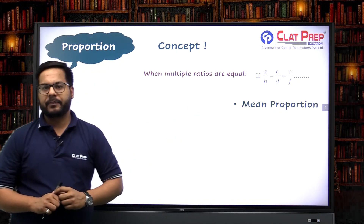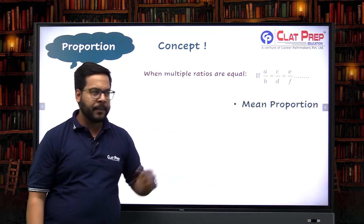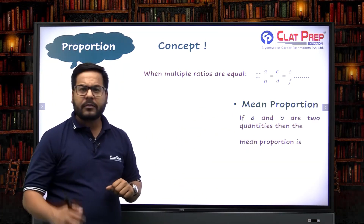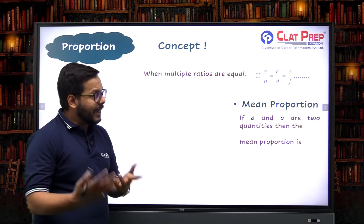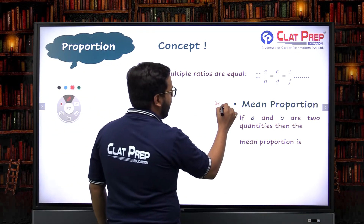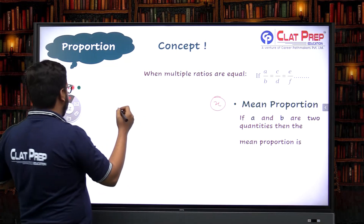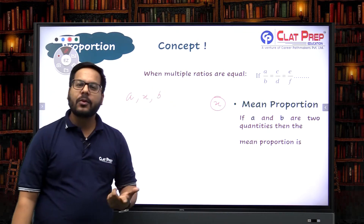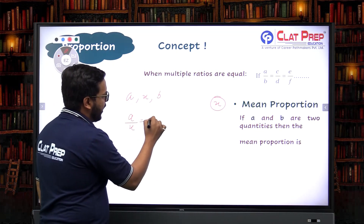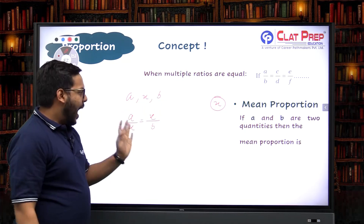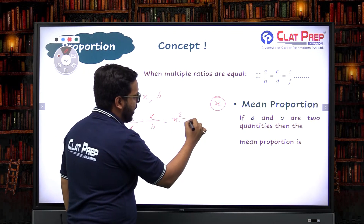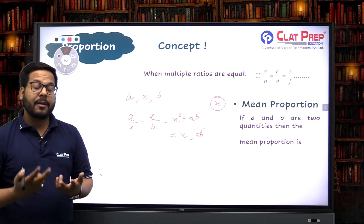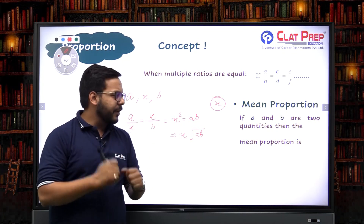The first aspect is mean proportion, also known as geometric mean. If two quantities a and b are given and we need the mean proportion between them, let it be x. Then the series becomes a, x, b — and if all three are in proportion, a/x must equal x/b. This gives x² = a·b, so x = √(ab). The mean proportion to a and b is the square root of their product.